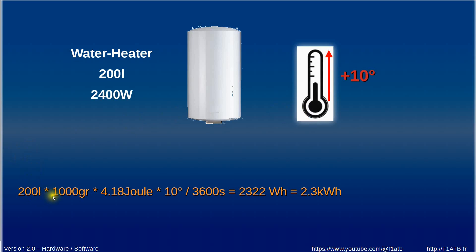200 liters times 1000 grams per liter multiplied by 4.18 joules because one calorie corresponds to 4.18 joules and multiplied by 10 degrees divided by 3600 seconds. That's a result of 2.3 kilowatt hour. That's the energy required to heat the temperature by 10 degrees.